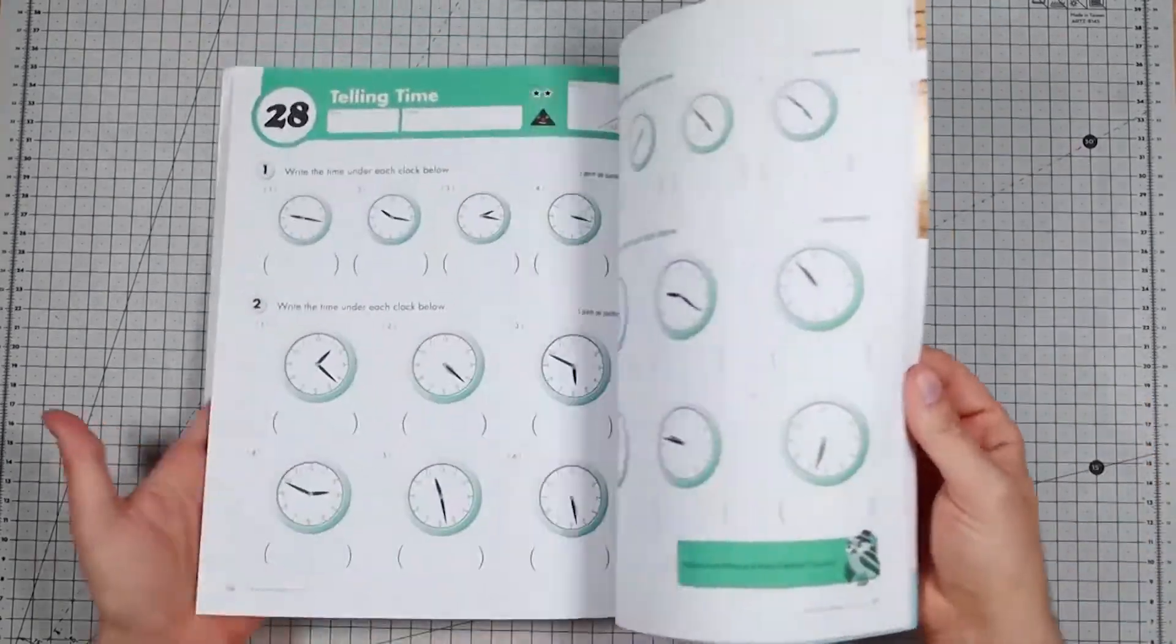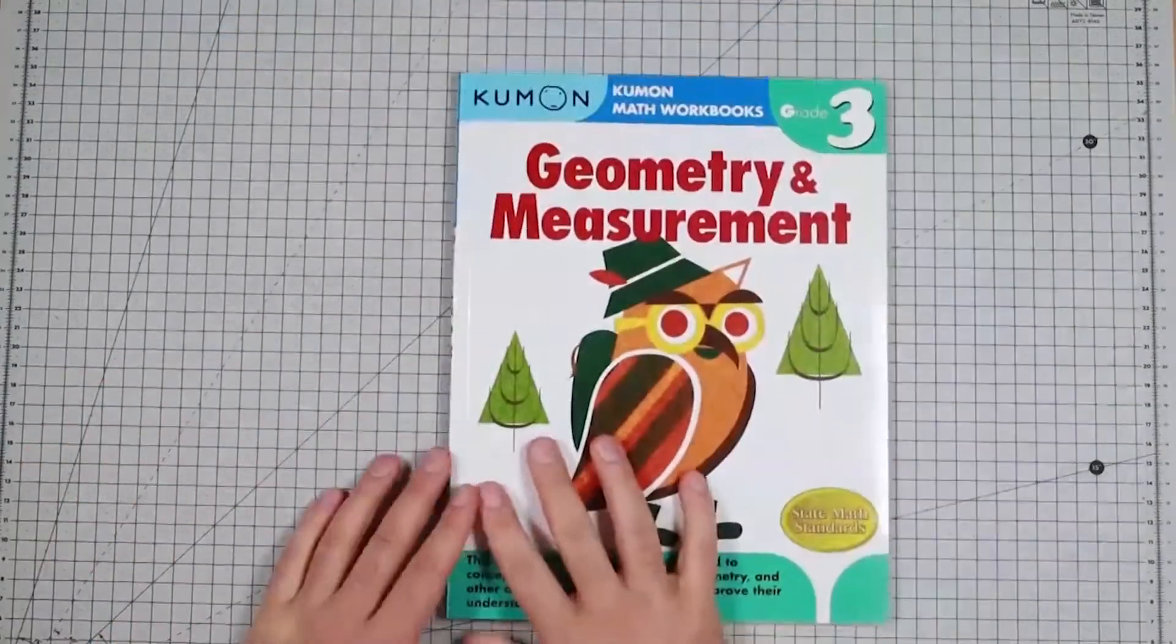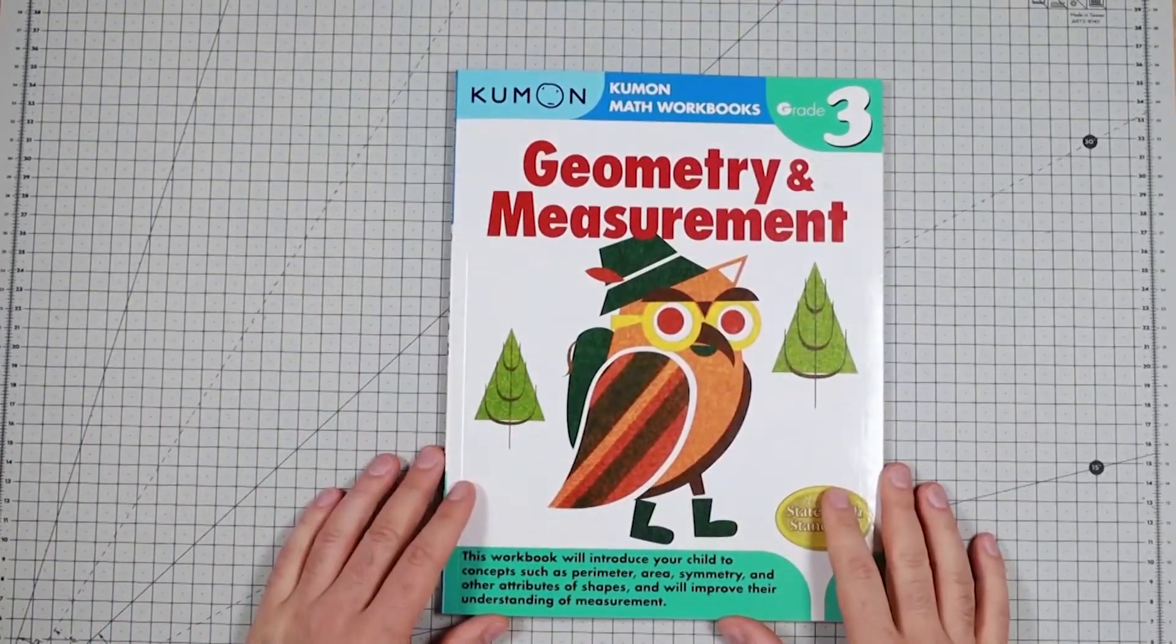A lot more clocks and some more geometry. There you have it, Kumon Geometry and Measurement Grade 3.